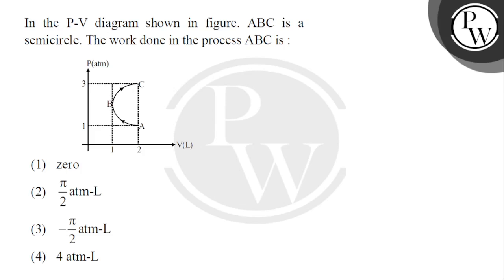Hello children, let's read the question. In the PV diagram shown in the figure, ABC is a semicircle. The work done in the process ABC is...